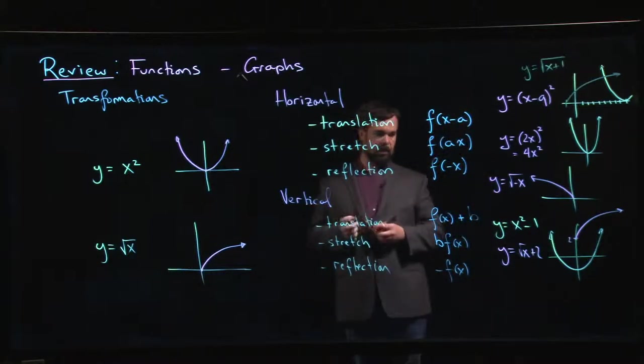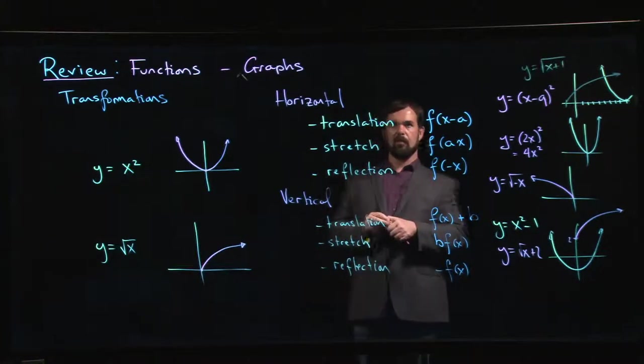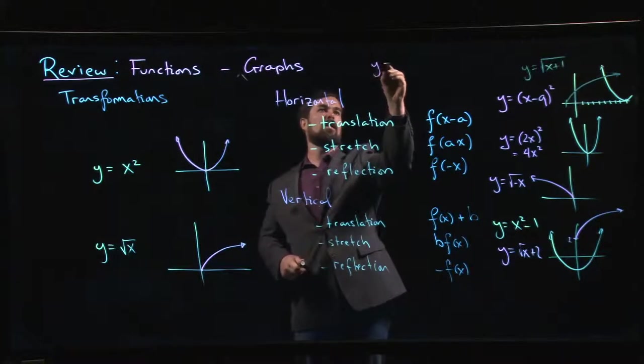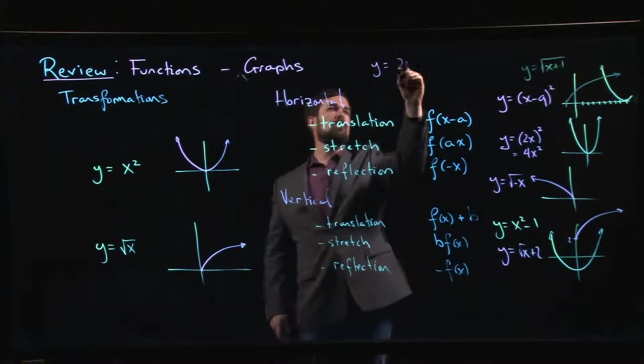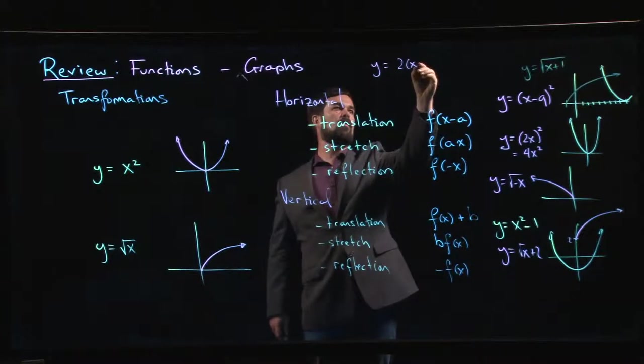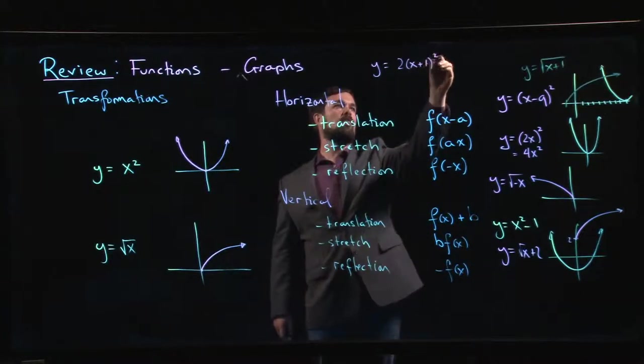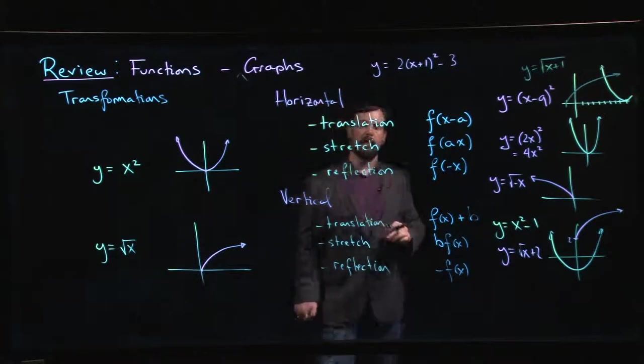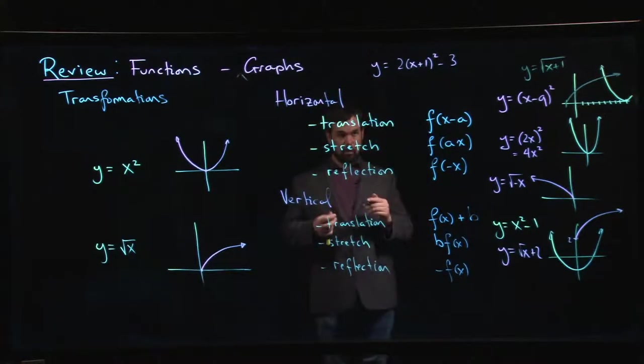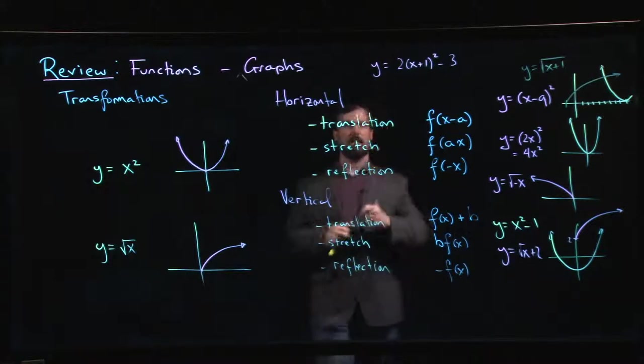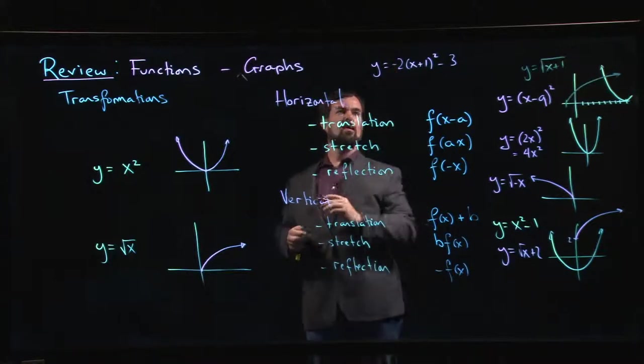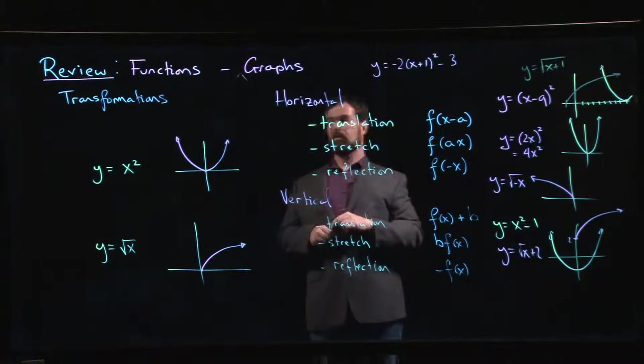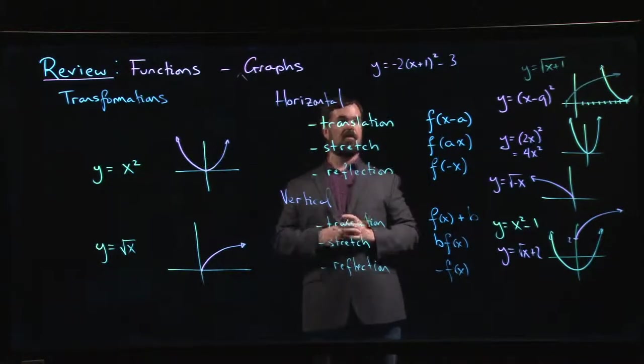I could do something like this: y equals −2 times (x plus 1) squared minus 3. So this is now several transformations all in one.